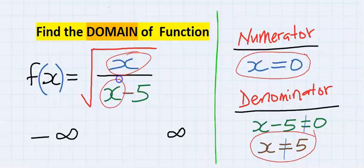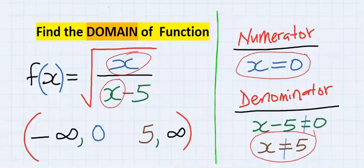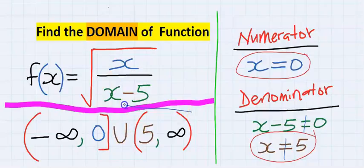x can take all real numbers towards negative infinity and towards positive infinity and can accept zero at the numerator, but will not accept zero at the denominator. The two statements will be joined with union. This is our final answer.